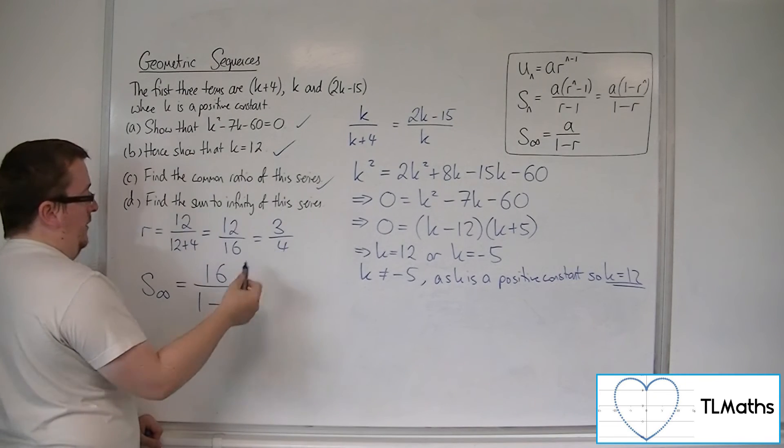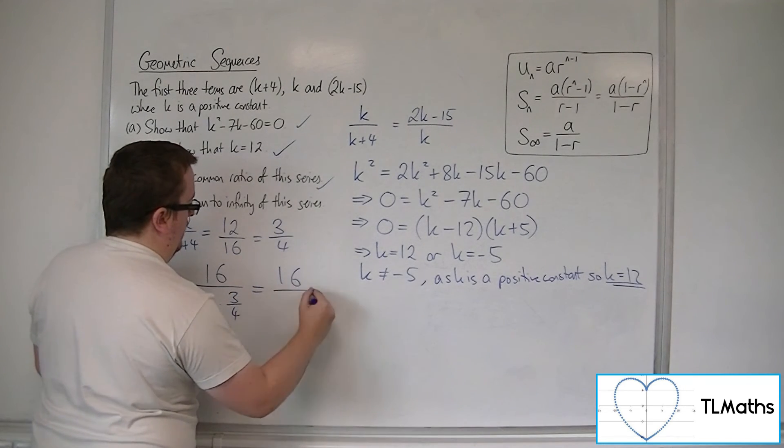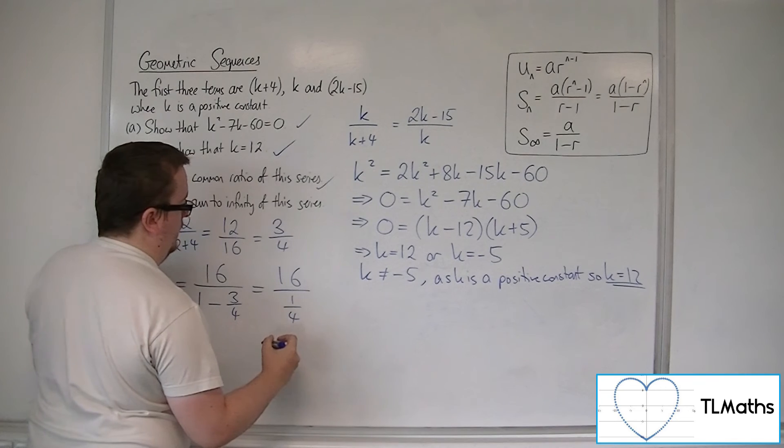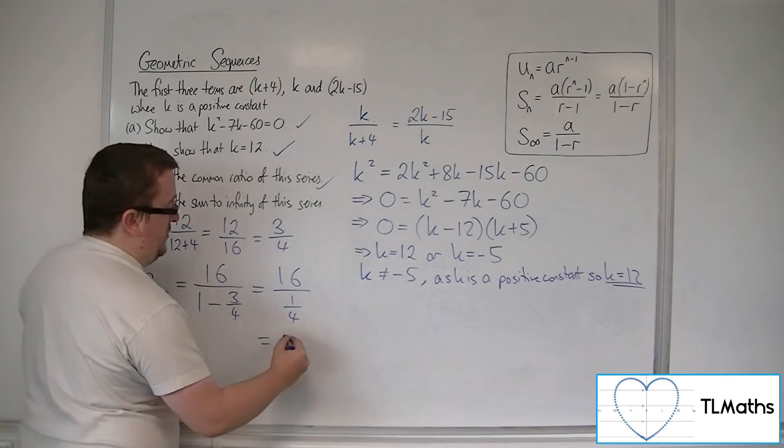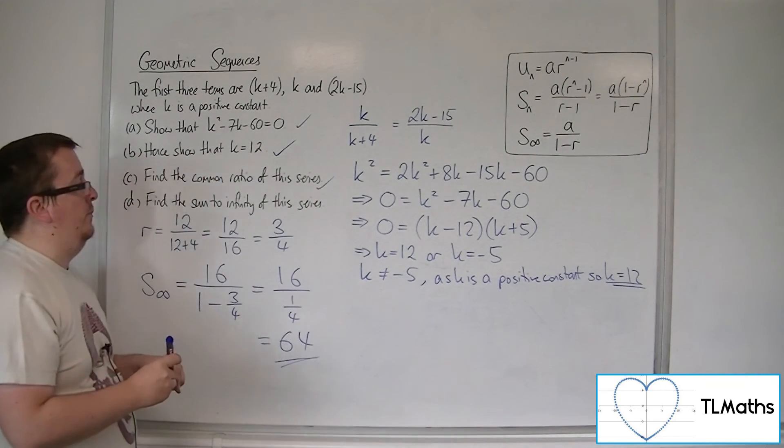So that's 16 over 1 take away, using the formula, r, so 3 quarters. So that's 16 over a quarter. And 16 divided by a quarter is 64. So 64 is the sum to infinity.